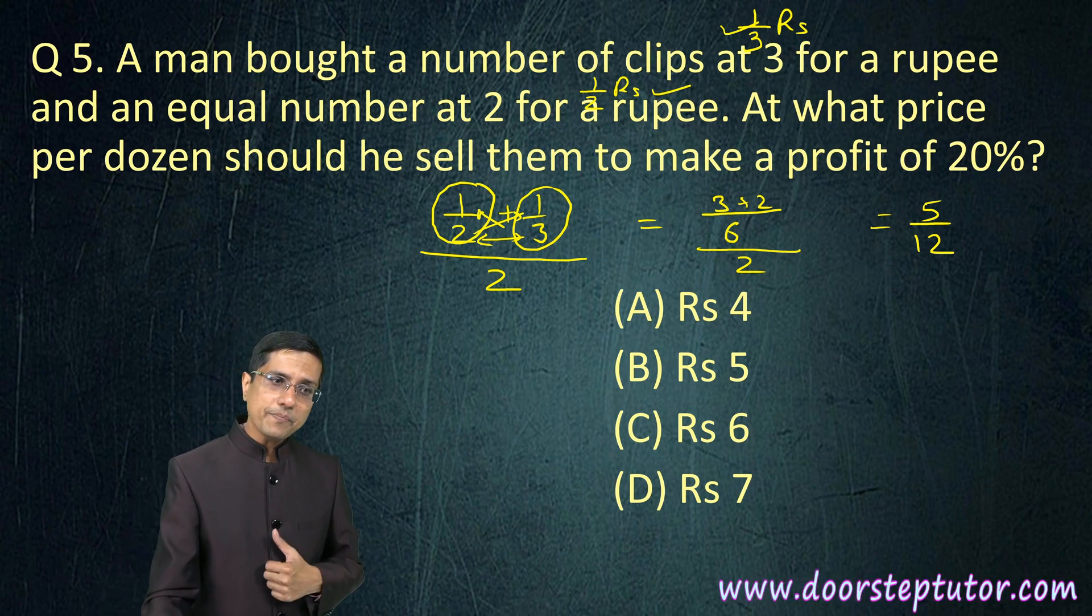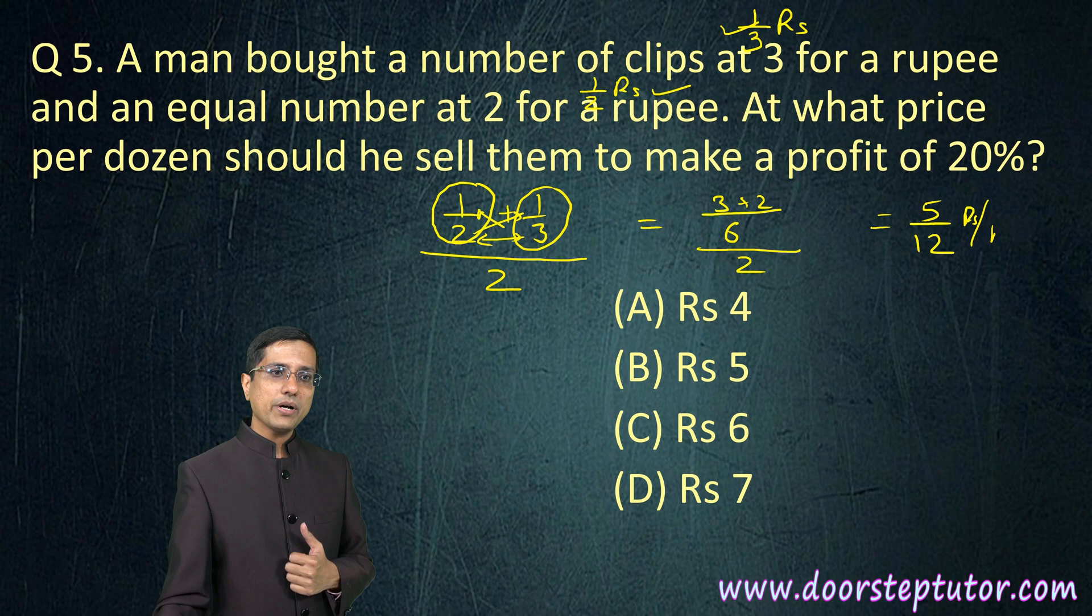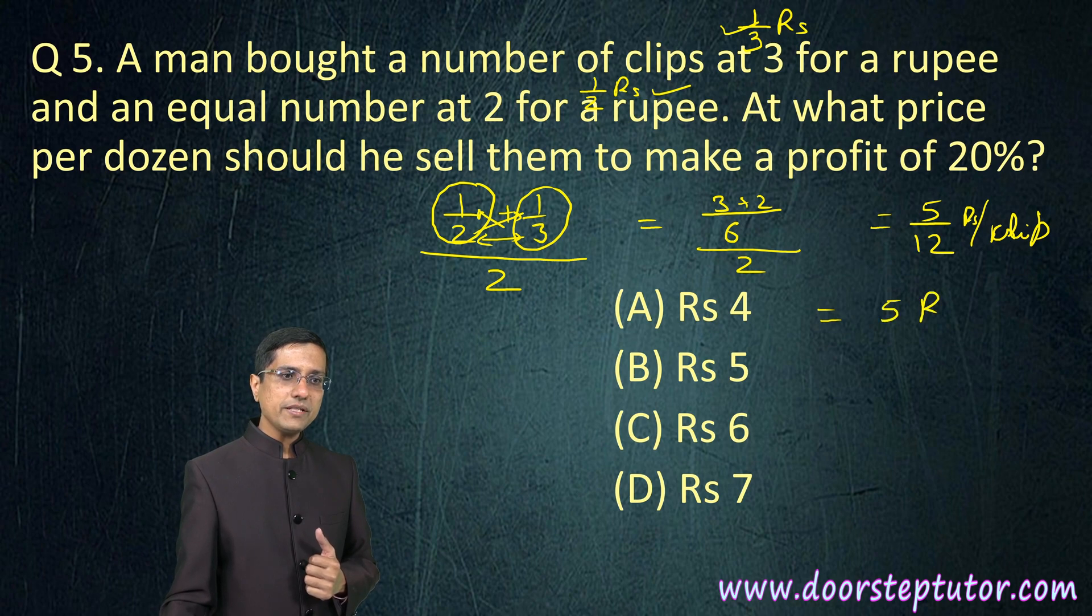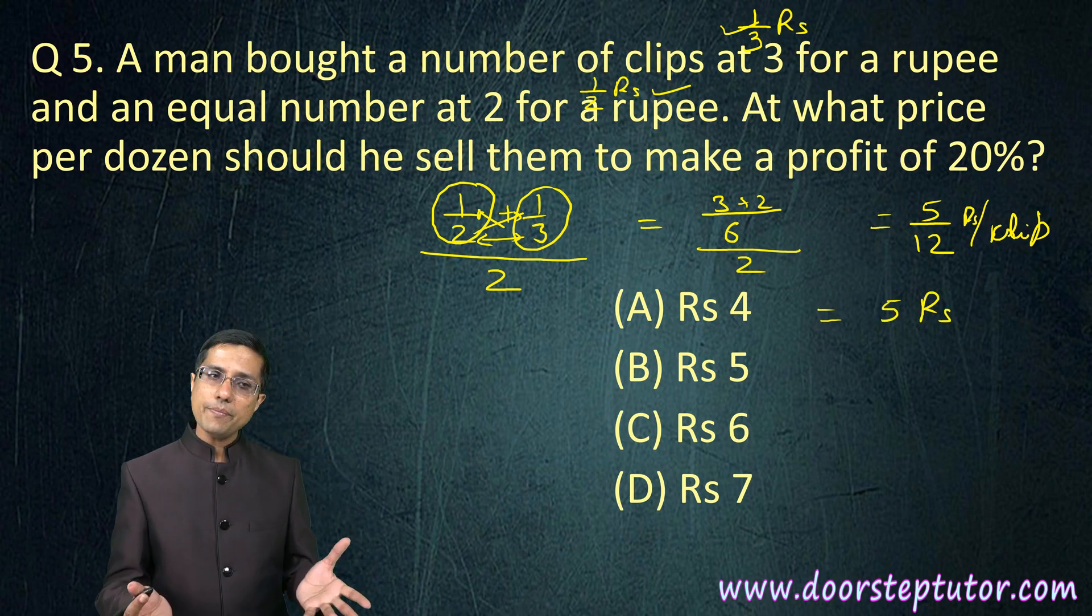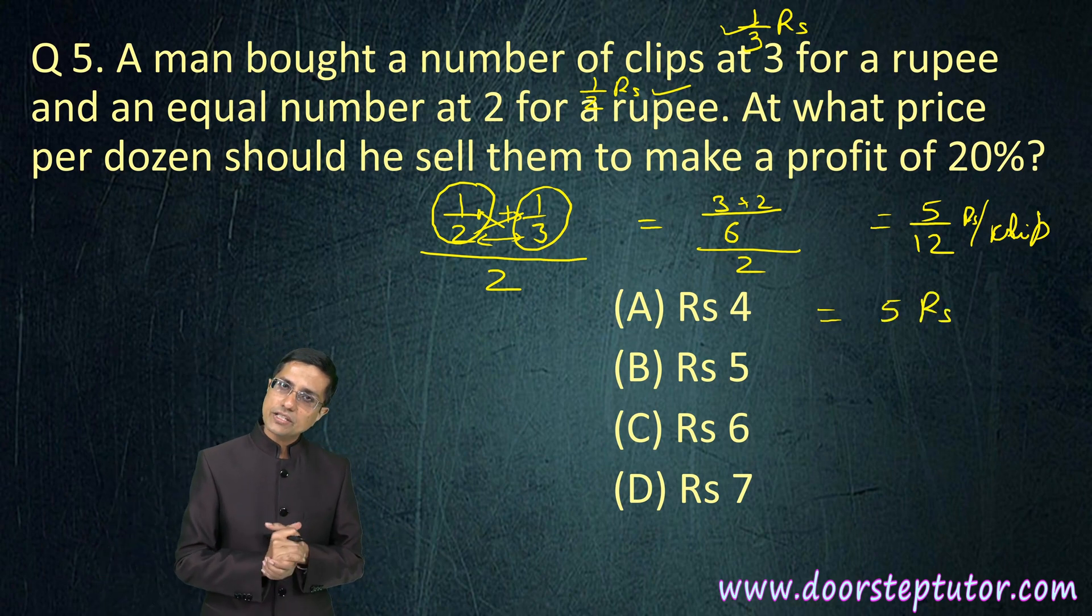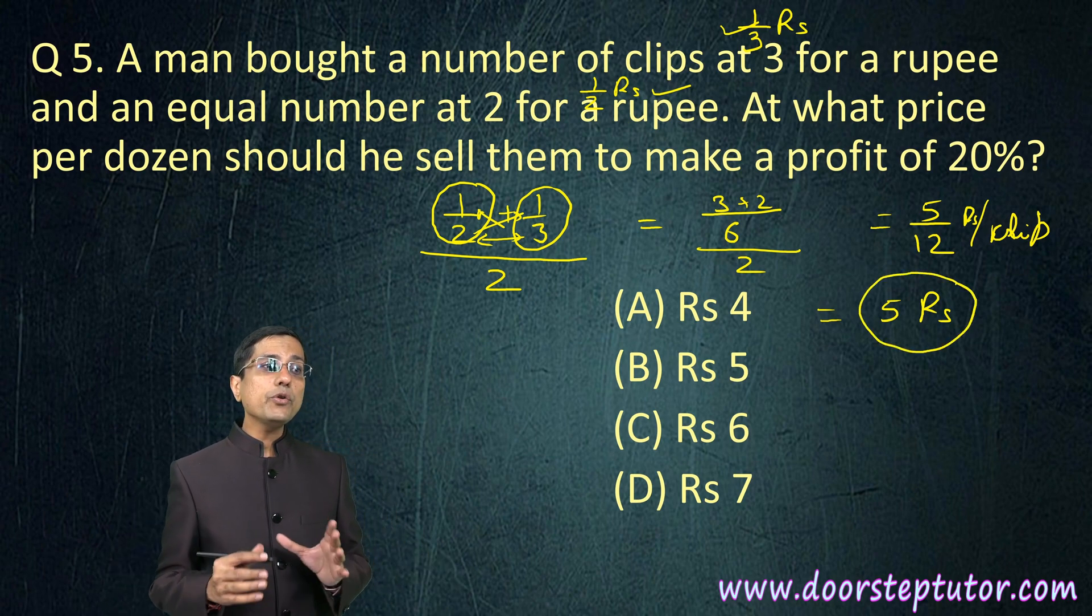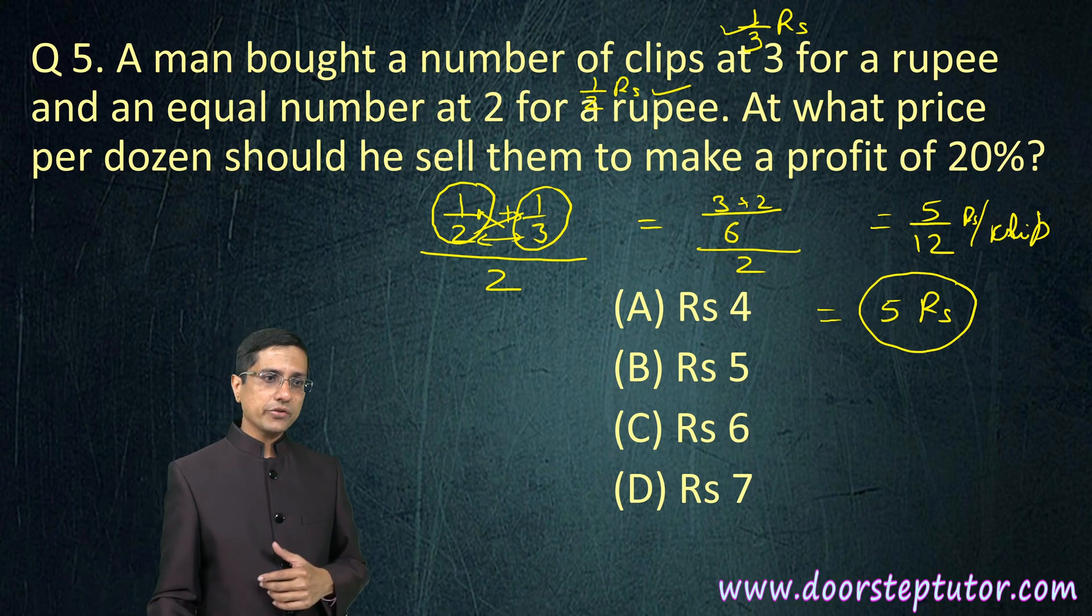For 12 clips what would be the cost? It would be 5 rupees. So 5 by 12 is per clip, so for 12 clips you multiply it by 12 and the answer would be 5 rupees. That is my average cost price.